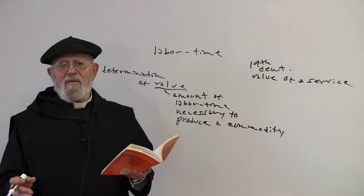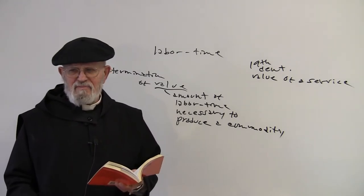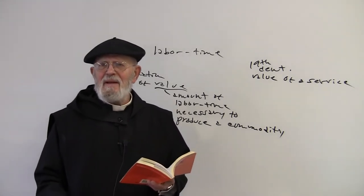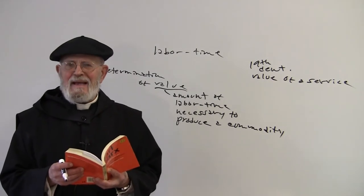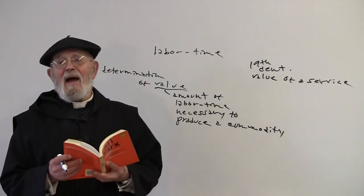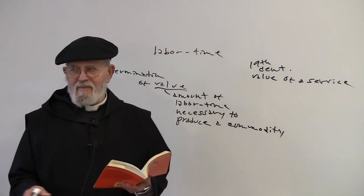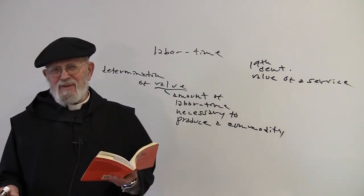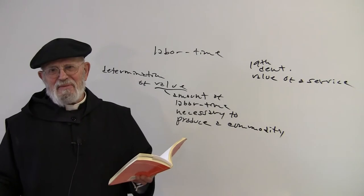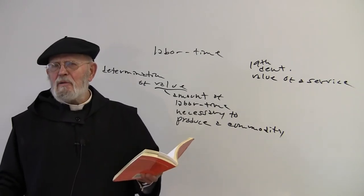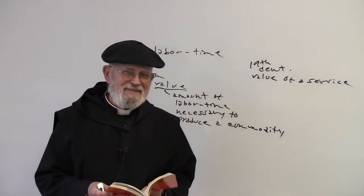A burial service, what is it, about eight thousand dollars? It depends on what kind of casket you have, what kind of service you have at the church, how much you pay the singer, the choir director, and the organist. It could run anywhere between twenty thousand and thirty thousand dollars. So what is the value of a service? It's what they are able to get away with charging.